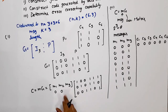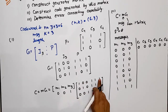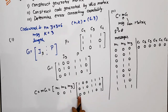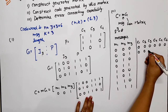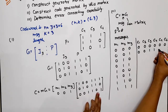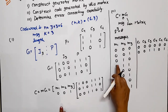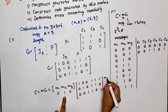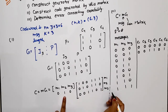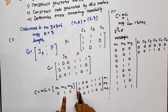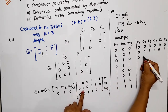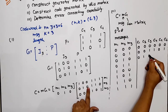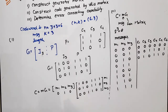For message 001, only M3 is available. Multiplying with the corresponding rows of G, we get code word 001101. For message 010, only M2 is available. Taking M2's row of G gives code word 010110.